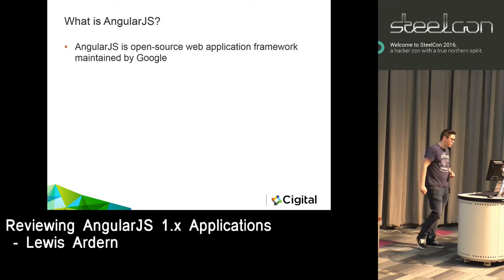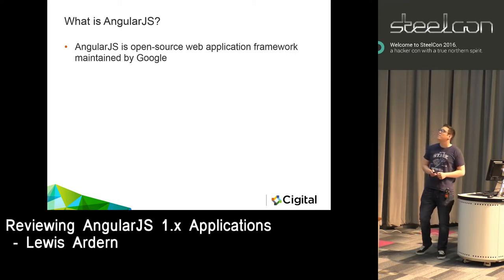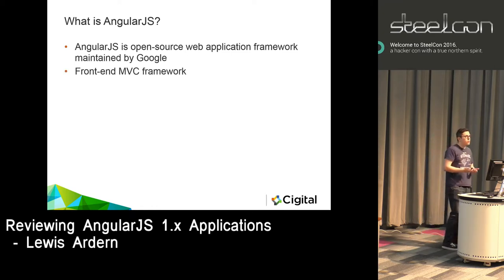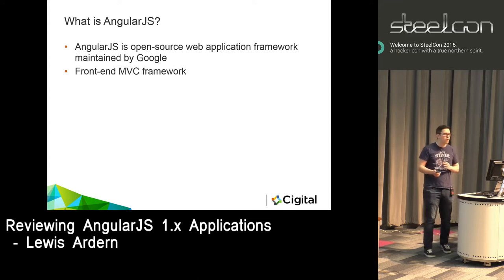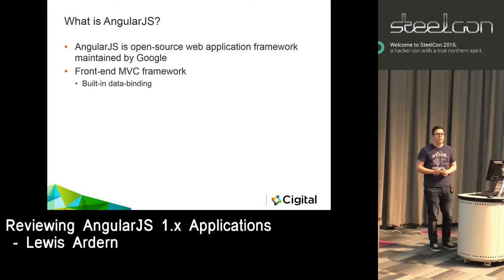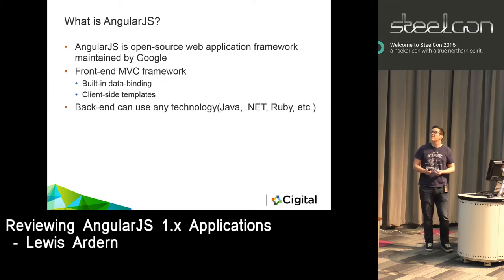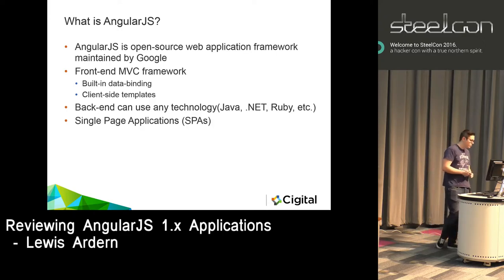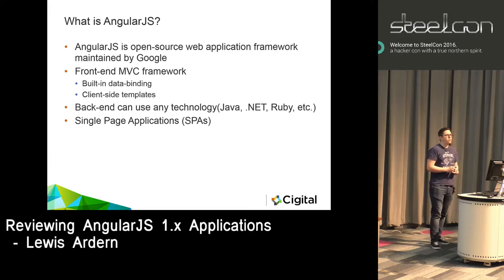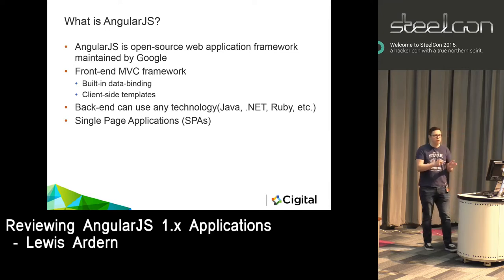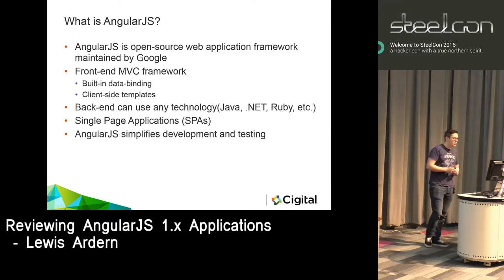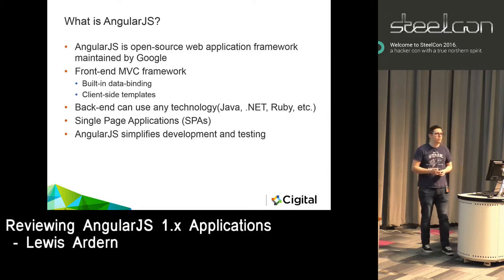AngularJS is an open source MVC platform created by Google. It's a front-end MVC - unlike typical server-side MVC where only the view is on the client, with Angular everything is on the client. It has built-in two-way and one-way data binding, client-side templates, and works with any back-end - Java, .NET, Ruby, PHP. Generally used for single-page applications with deep JavaScript links for a fluid experience, and it's supposed to simplify development and testing.